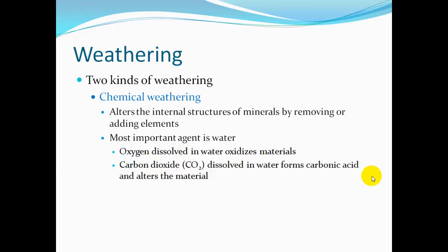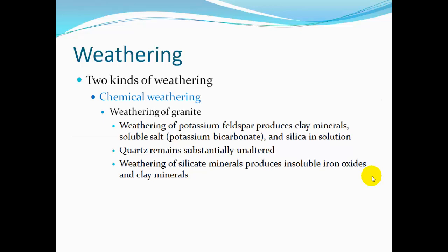Two kinds of chemical weathering. Chemical weathering alters the internal structures of minerals by removing or adding elements. One important agent is water. Oxygen dissolved in water oxidizes materials. Carbon dioxide, CO2, dissolves in water and forms carbonic acid and alters material. Weathering of potassium feldspar produces clay minerals, soluble salt, potassium bicarbonate, and silica in solution. Quartz remains substantially unaltered. The weathering of silicate minerals produces insoluble iron oxides and clay minerals.